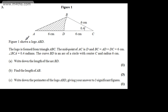This is question number 3. We're told figure 1 shows a logo ABD. The logo is formed from triangle ABC. The midpoint of AC is D, and BC equals AD equals DC equals 6 cm. The angle BCA is 0.4 radians. The curve BD is an arc of a circle with centre C and radius 6 cm.